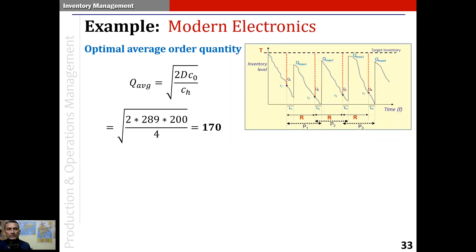First, the average optimal order quantity. We apply the basic EOQ formula because neither gradual replenishment nor backordering are permitted here. Taking D as 289, ordering cost as 200, and the holding cost per month as 48/12 = 4, we get 170. This is the optimal average order quantity — in other words, the average of Q1, Q2, Q3 would be 170.